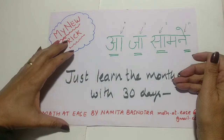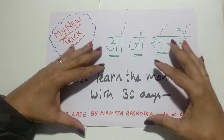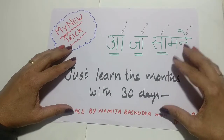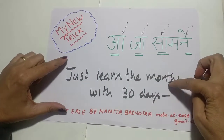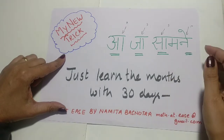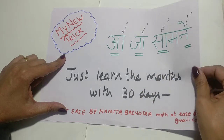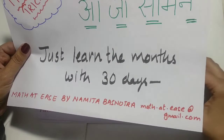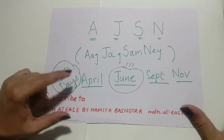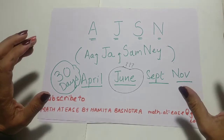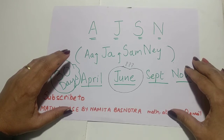So here is my new trick. Instead of learning so much or going through the fist trick, we can simply learn the months with 30 days. And there are only four such months. So you don't have to learn all 12 months — you only need to learn April, June, September, and November. These are the four months which have 30 days.